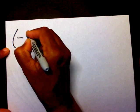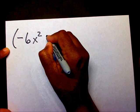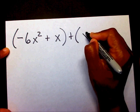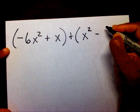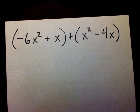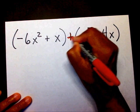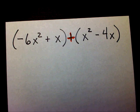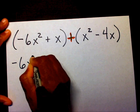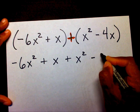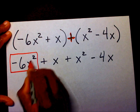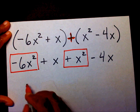Let's try another one. Let's add negative 6x squared plus x, plus x squared minus 4x. Again, since I'm adding these two polynomials — and I'm going to do a video on what a polynomial is, so please watch that — since I have a plus sign here, I just need to drop my parentheses: negative 6x squared plus x plus x squared minus 4x. Now I just need to combine my like terms. I have negative 6x squared plus 1x squared, which is negative 5x squared.